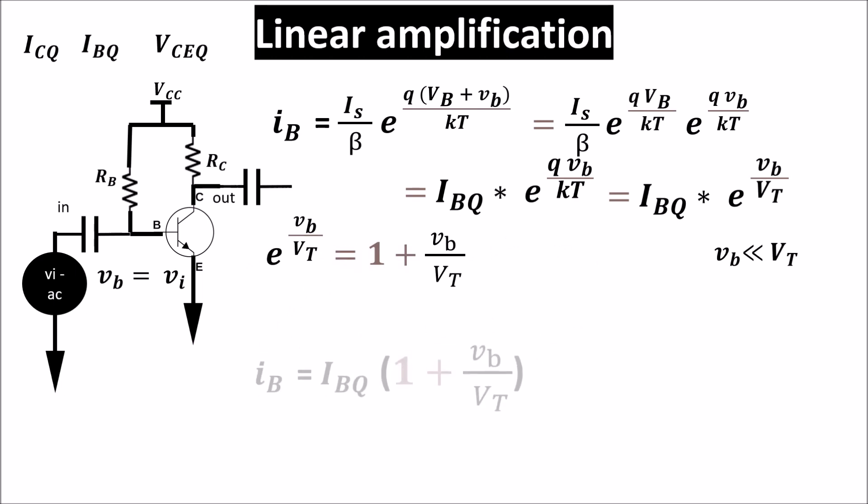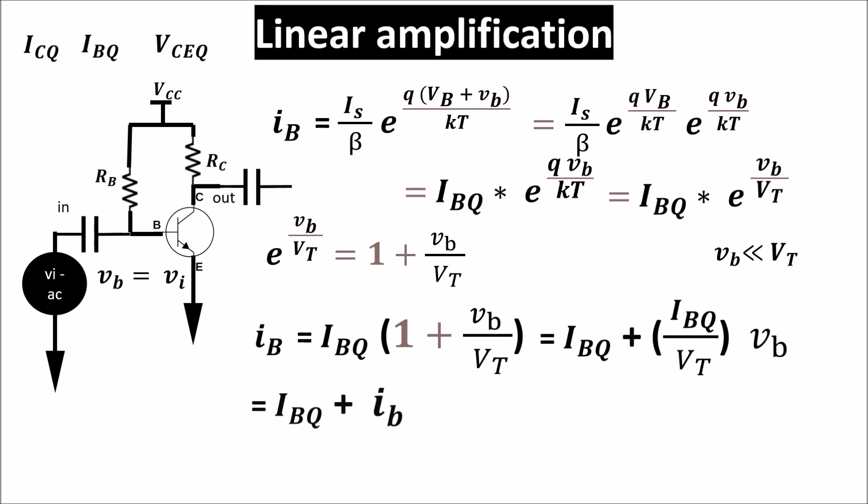And so we can write this, where the new base current is the sum of the base current in DC, IBQ, plus a term which varies linearly with VB, so with our input signal. We can call this term IB lowercase, which is the base current variation produced by the input signal VI.